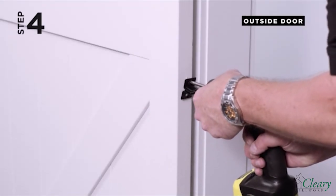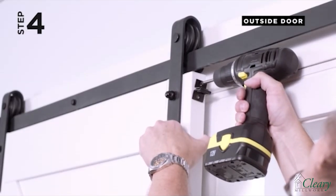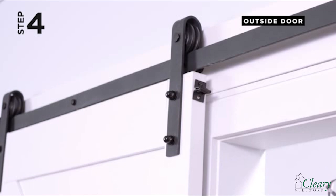Step 4. Affix both T-brackets, one upper and two lower, using one inch screws provided. Note, ensure the brackets are centered on the door.